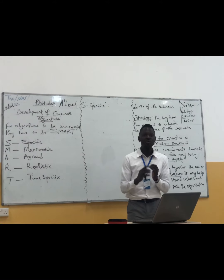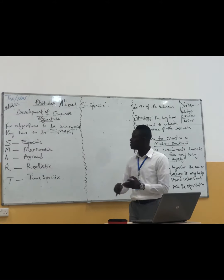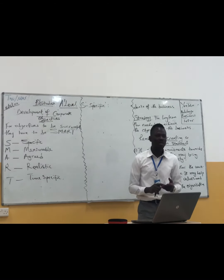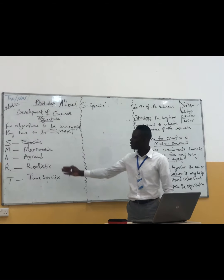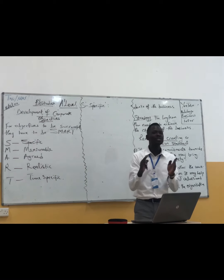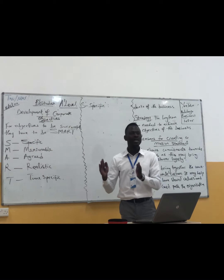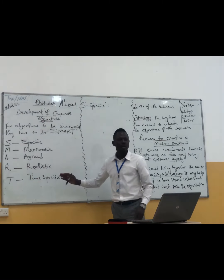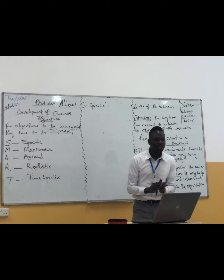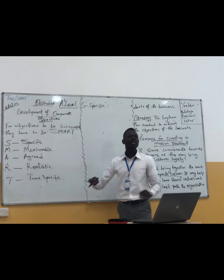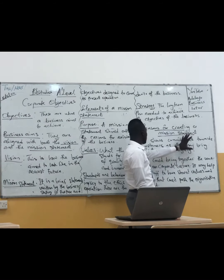An objective must be Specific — it must be clearly stated. An objective must be Measurable — it must be quantifiable, it must have numbers. An objective must be Agreed upon — your employees must accept that this is what we have to achieve and that it is achievable. Realistically, you must provide your resources to achieve this objective. Time-specific — it must be stipulated with a due date.